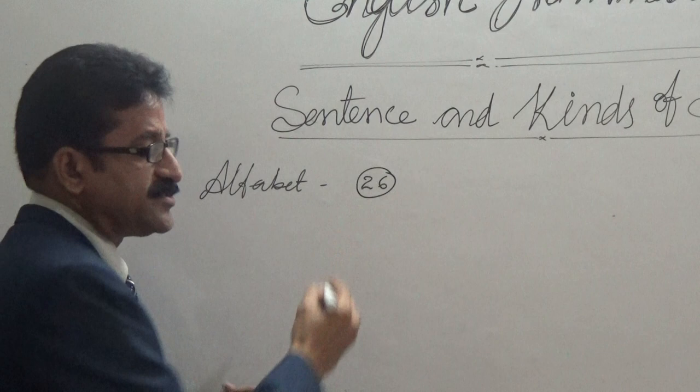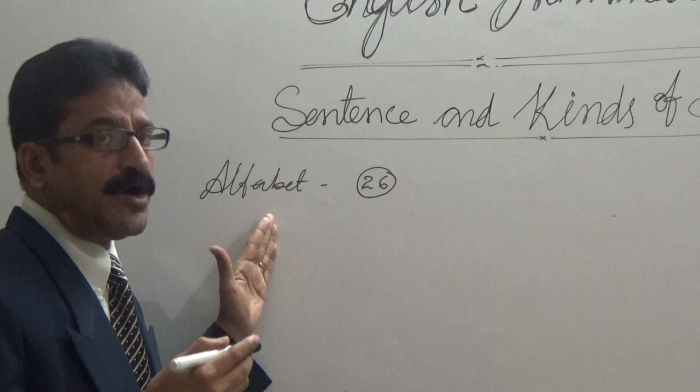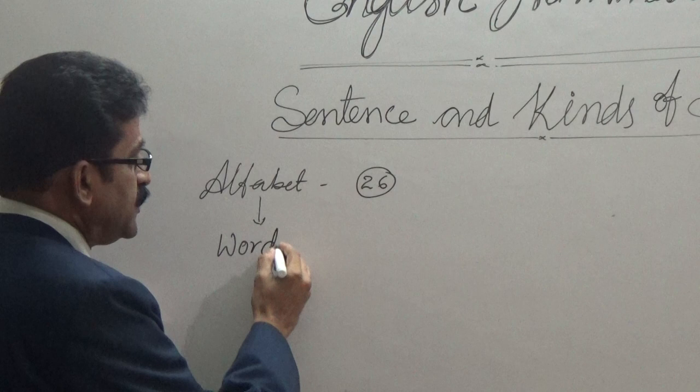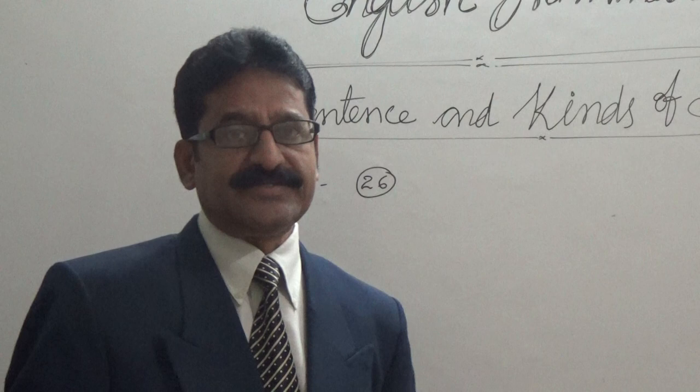We have to use these alphabets to make words or sentences. Basically, from alphabet we can make words. A word is a meaningful combination of letters that makes sense — it's called a word.